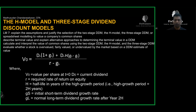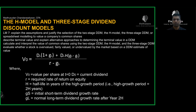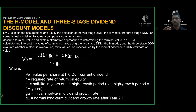If you have a constant growth rate forever, you can use the Gordon Growth Model. For a two-stage model, the period before that requires a higher growth rate — you calculate those cash flows and bring them to present value. Or, if you're able to project for a forecast horizon of five or seven years, find the DPS and calculate the value that way.